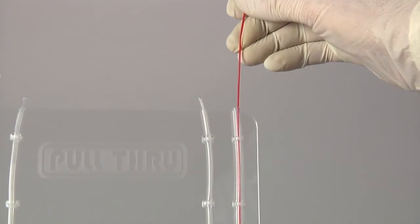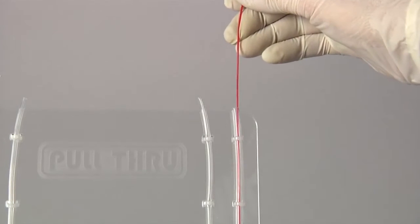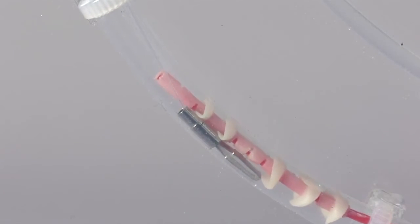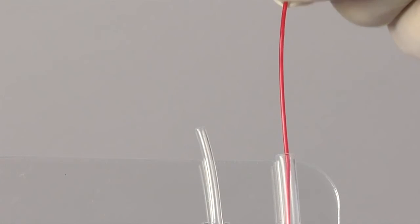If the obstruction becomes lodged hard enough to defeat the pull through, it is immediately obvious to the technician as the resistance from the pull through changes dramatically. The load from each individual wiper engaging the obstruction can be felt as the leader advances.